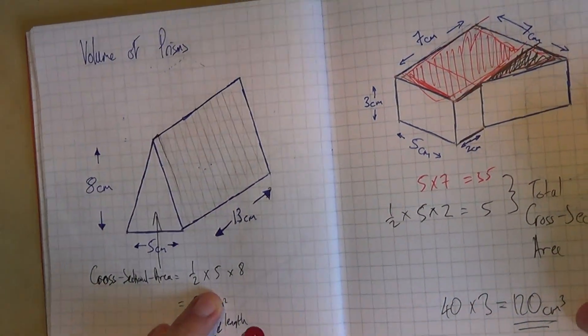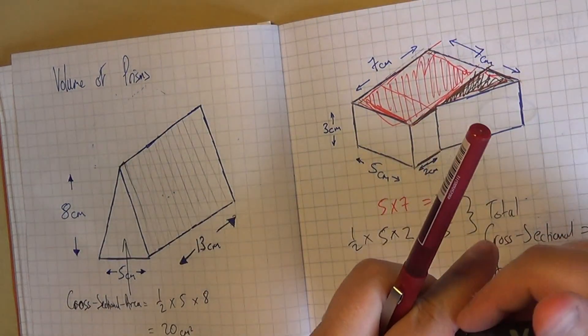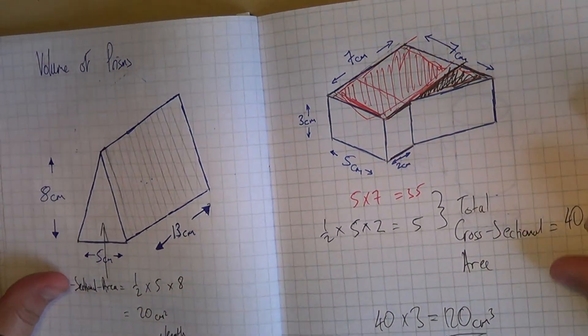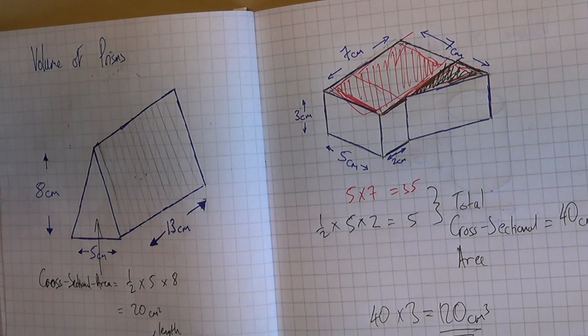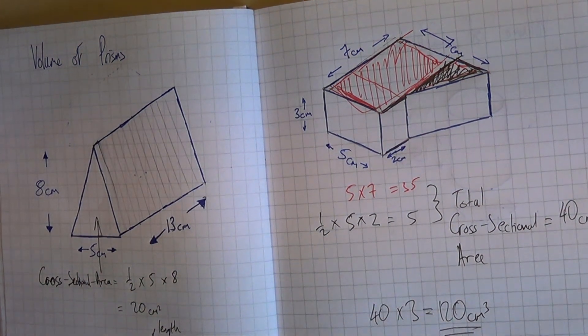Depending what shape is on the end, this could be very easy or very tricky. Here it was just a triangle. Here it was some composite shape made of triangles and rectangles. It could even be a trapezium or some other horrible shape. So enjoy those and we'll get those sorted. Thank you.